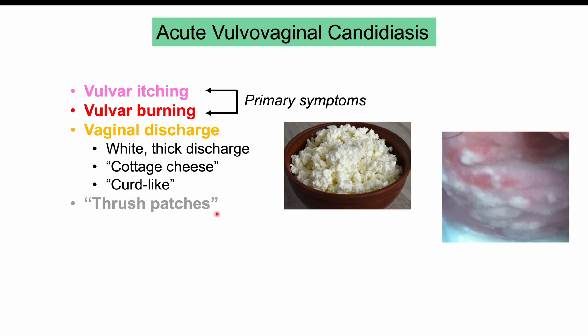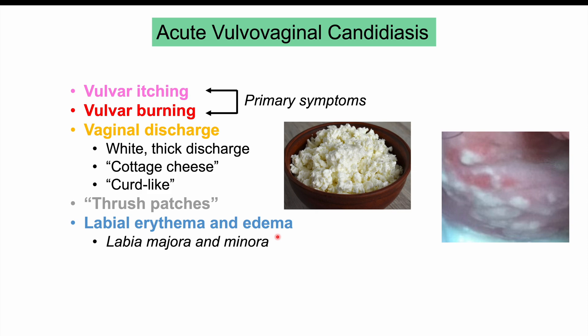We can also see thrush patches and labial erythema and edema — the labia majora and minora become reddened and swollen due to the inflammatory response. Patients may also experience dysuria, a burning sensation when urinating. Symptoms may be more pronounced just prior to menstruation and can be exacerbated after urination or intercourse. Symptoms are most typical with candida albicans; candida glabrata infections may present with milder symptoms.